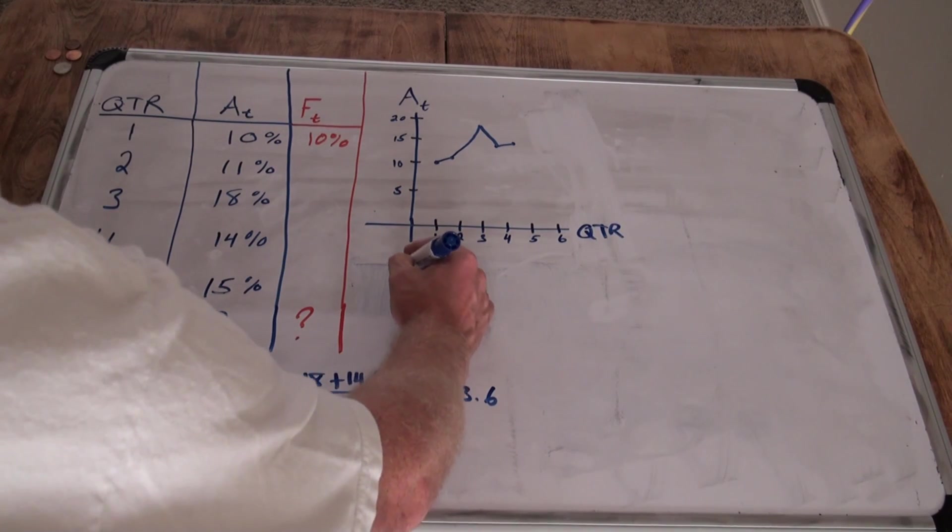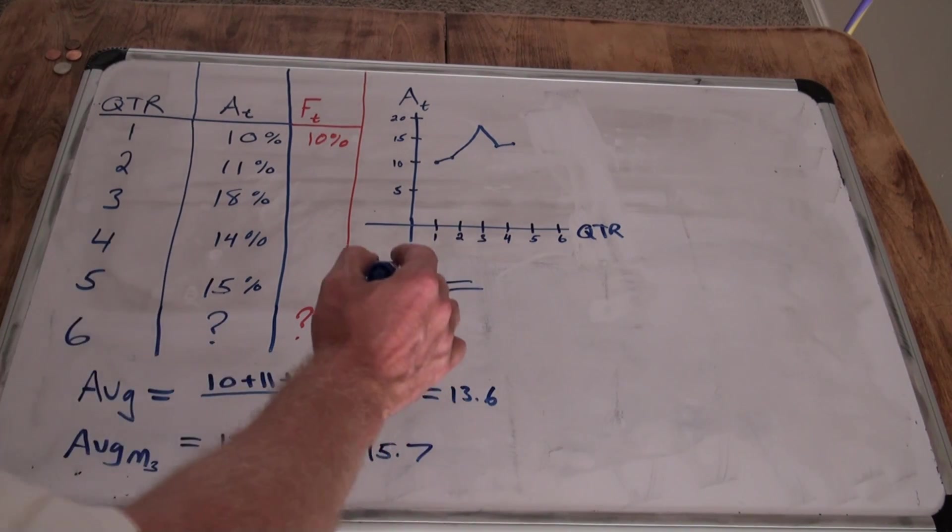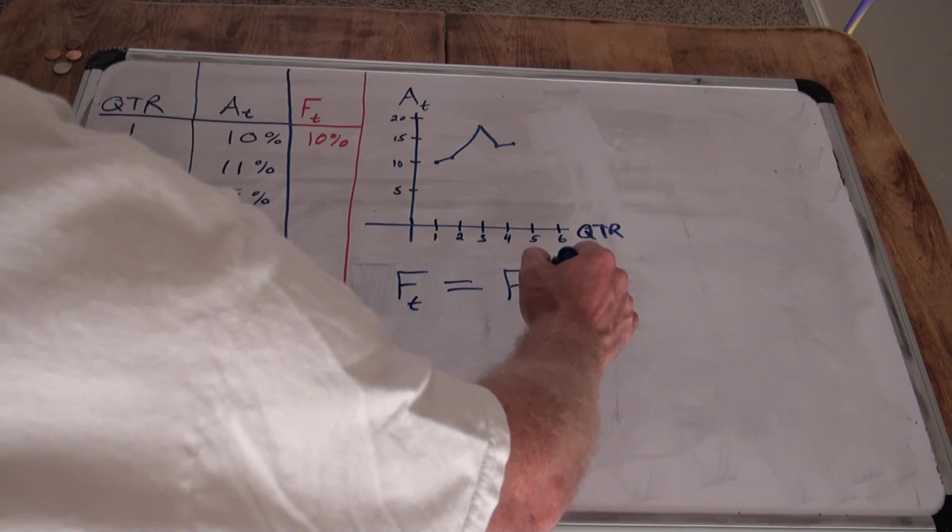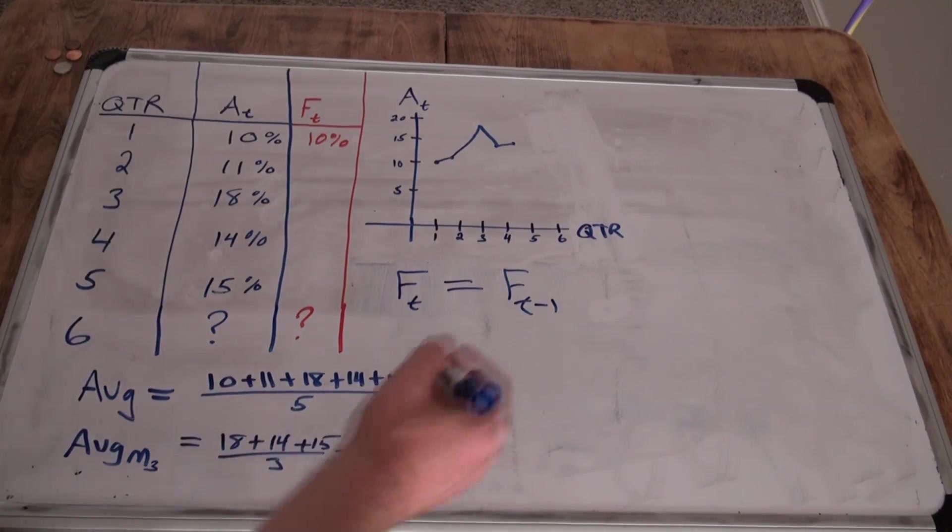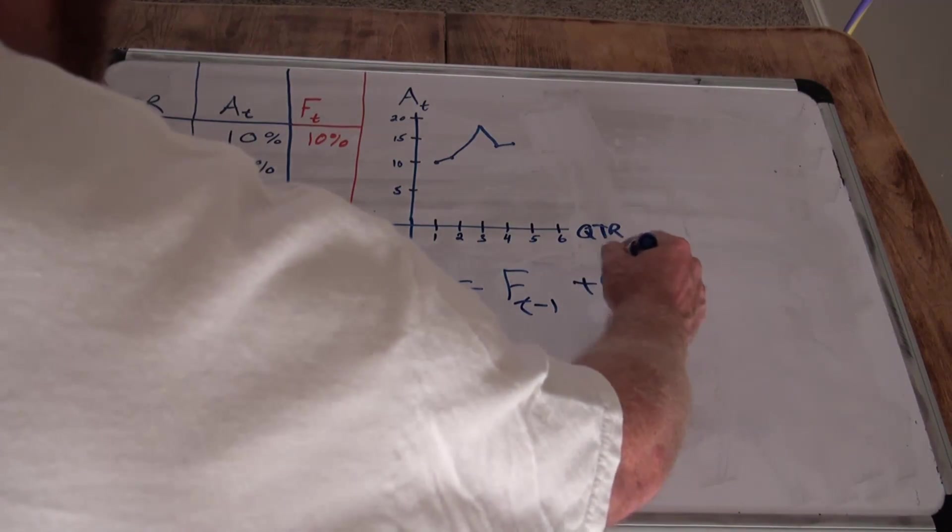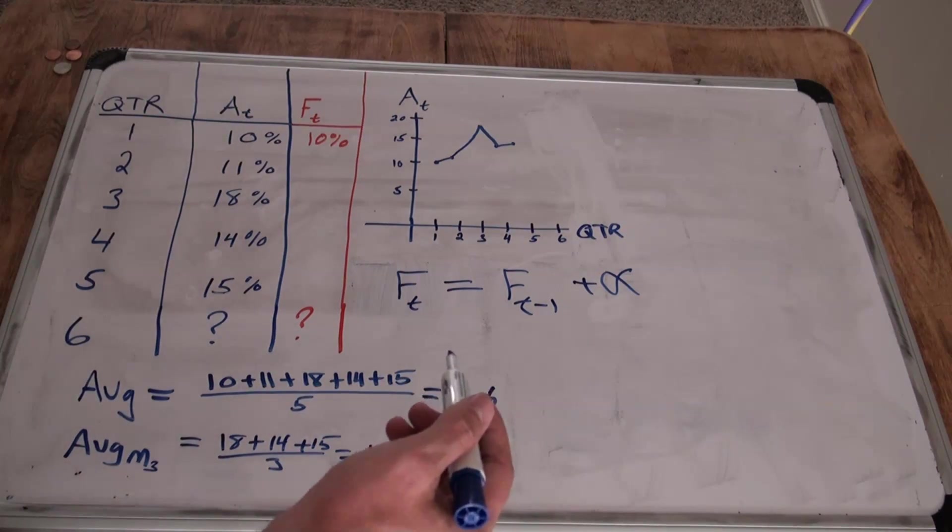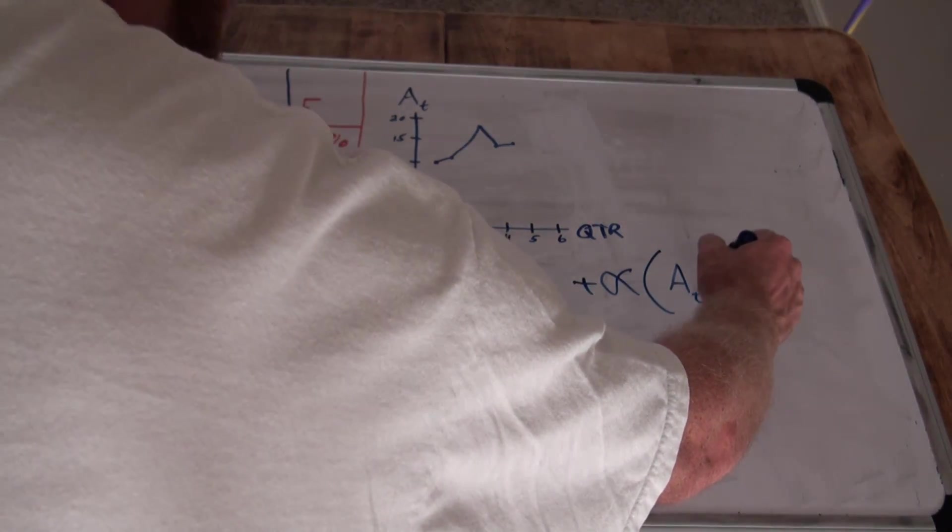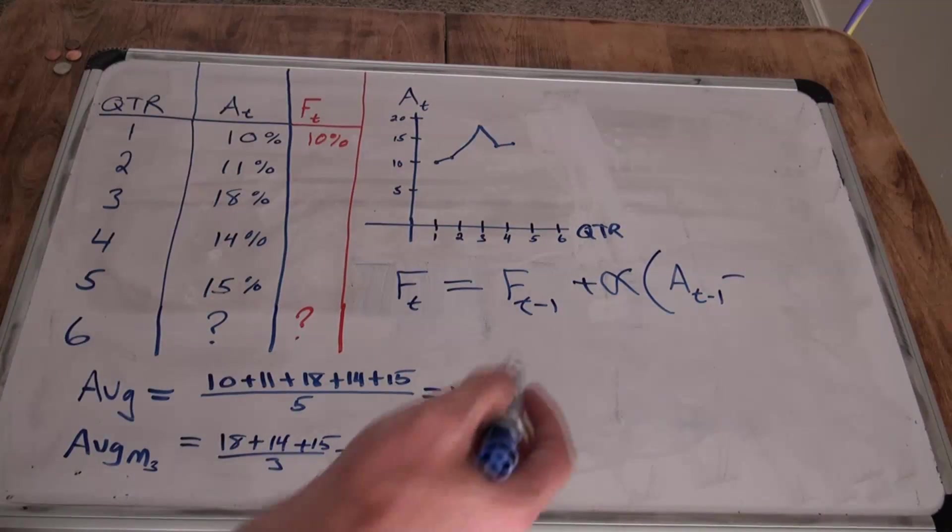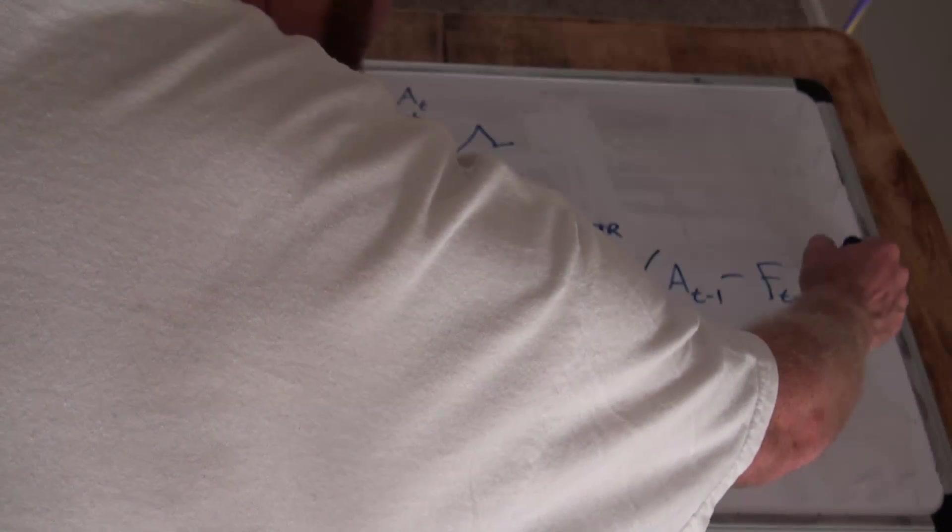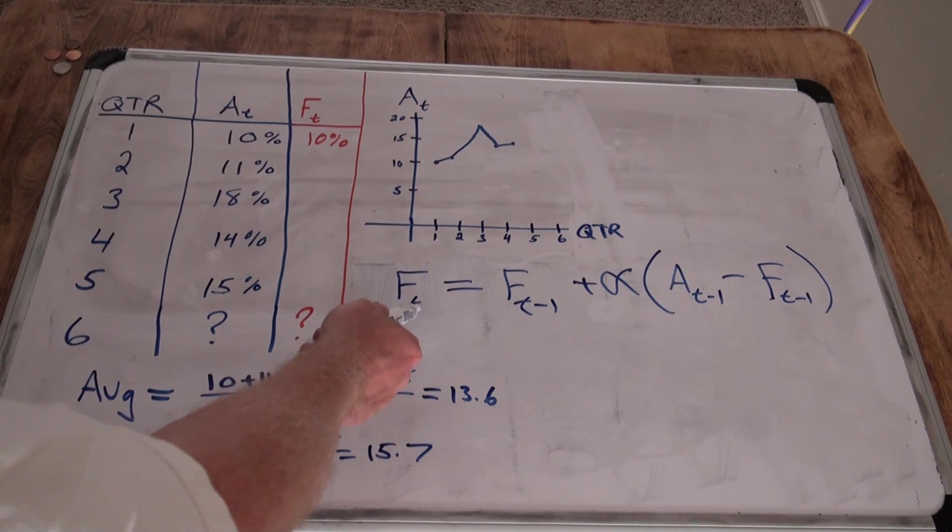So the definition of exponential smoothing in this example, I'm going to give you a formula and it's simply the forecasted at period t is going to be equal to the forecasted at t minus one, which is the period before t, plus alpha, that's a Greek letter alpha, times A to the t minus one, which is actual, minus F of t minus one.